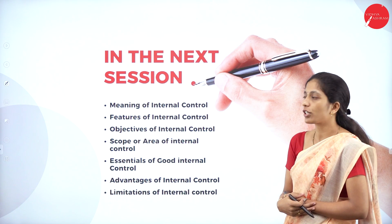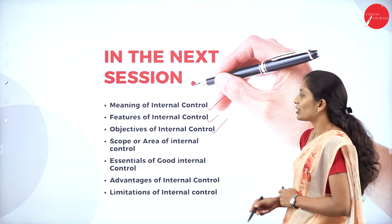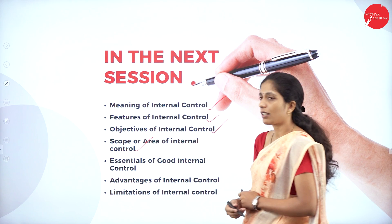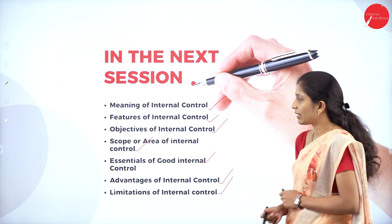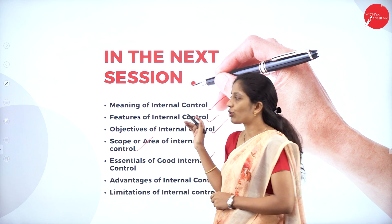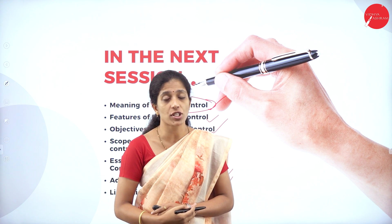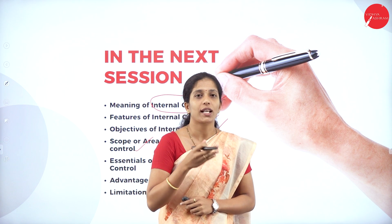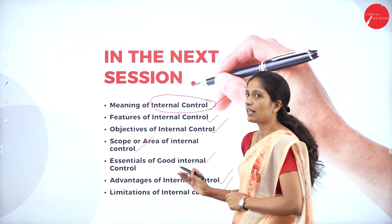In the next session, we are going to discuss the meaning of internal control, features of internal control, objectives of internal control, scope or area of internal control, essentials of good internal control, and advantages and limitations of internal control. In today's session we have learnt about internal check — what are the advantages, limitations, and essentials of internal check. See you all in the next session. Till then, take care. Thank you.